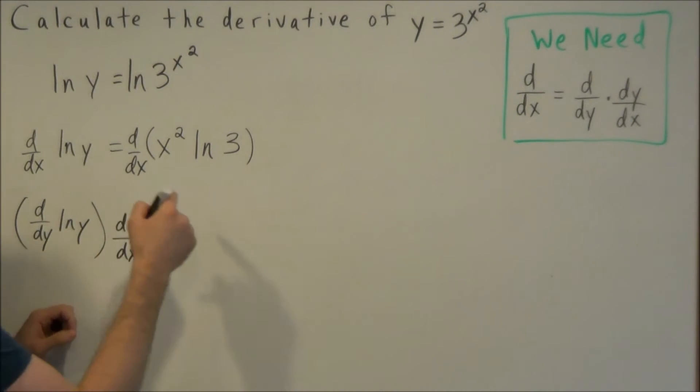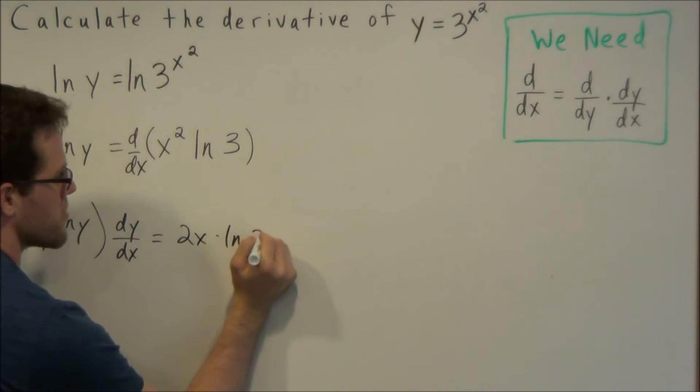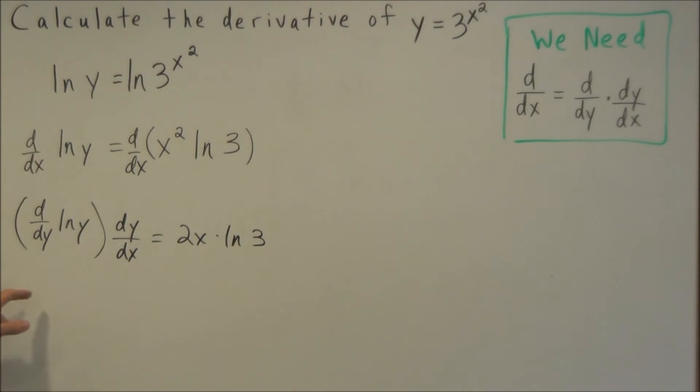So now on the right hand side, this derivative is just 2x times natural log of 3. Okay, so now to simplify the left hand side, we could do the derivative of natural log y, and the derivative of natural log y is 1 over y.